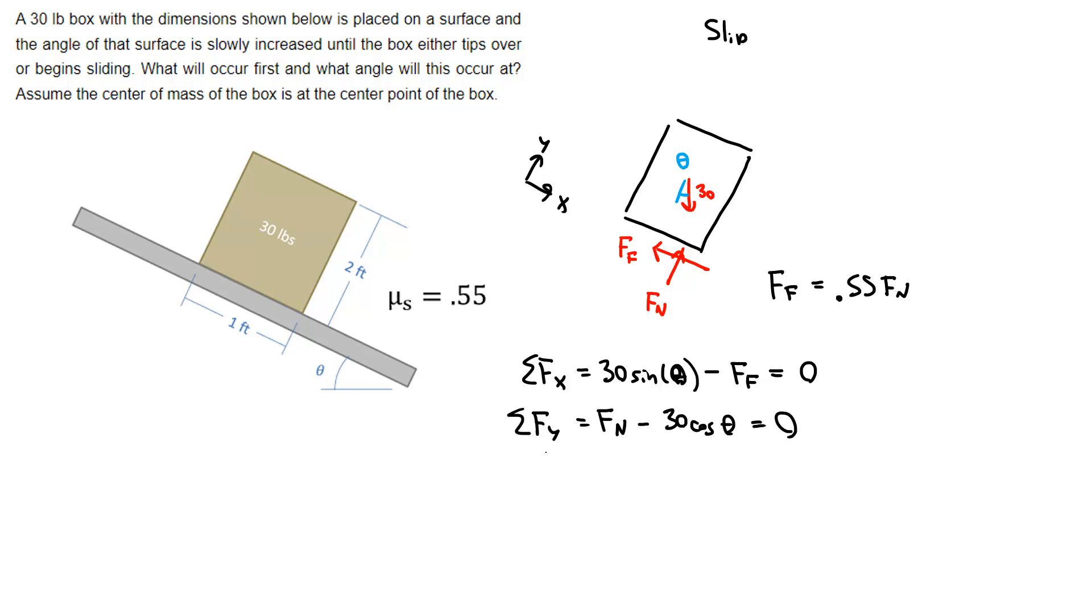First I'm going to take the y equation and solve for Fn. So Fn equals 30 cosine theta. Next up I'm going to take the x equation and plug in this Fn value. So 30 times the sine of theta minus 0.55 Fn, where Fn equals 30 cosine theta, equals zero.